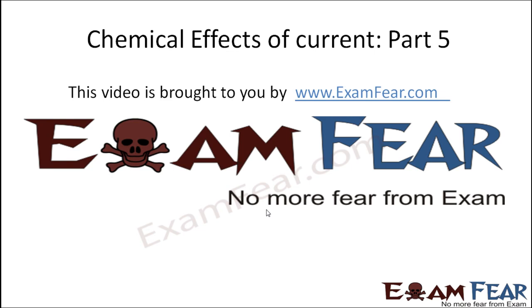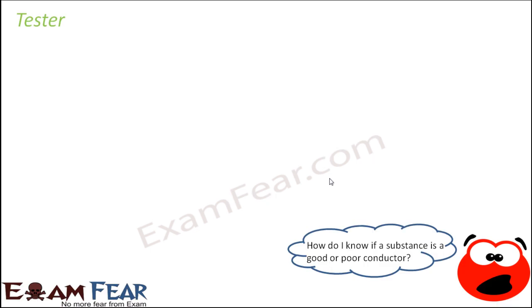Hello friends, this video on chemical effects of current part 5 is brought to you by examfear.com. The question is: how do I know if a substance is a good conductor of electricity or a poor conductor? In the previous slide, I gave a few examples — for instance, water as a good conductor and plastic as a poor conductor.